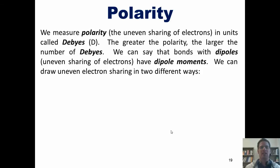We can draw uneven electron sharing in two different ways. In one of them, we show this Greek symbol delta with a negative next to it, adjacent to the atom that has a strong partial negative charge, the more electronegative atom.